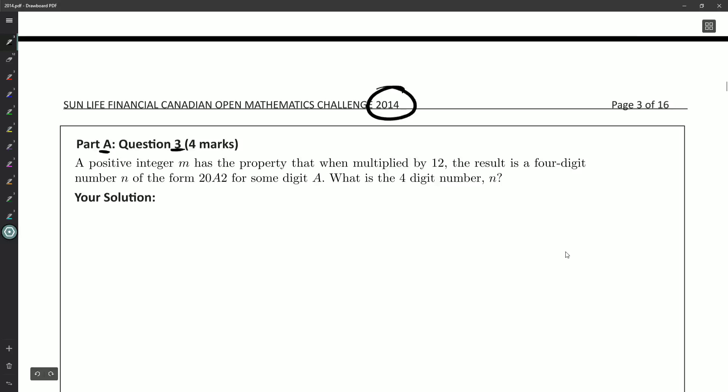What have we got? A positive integer M has the property that when it's multiplied by 12, so when it's 12M, the result is a four-digit number N of the form 2082 for some digit A. What is the four-digit number N?